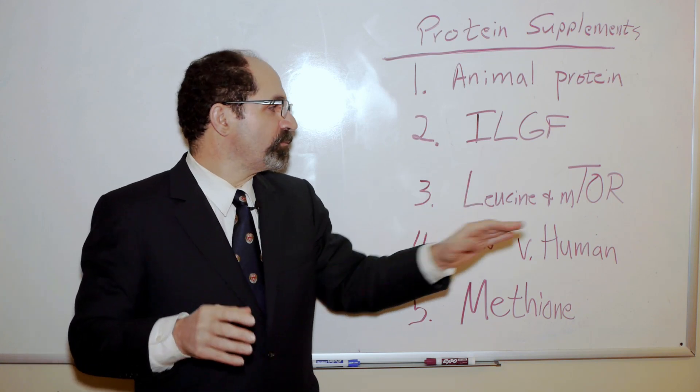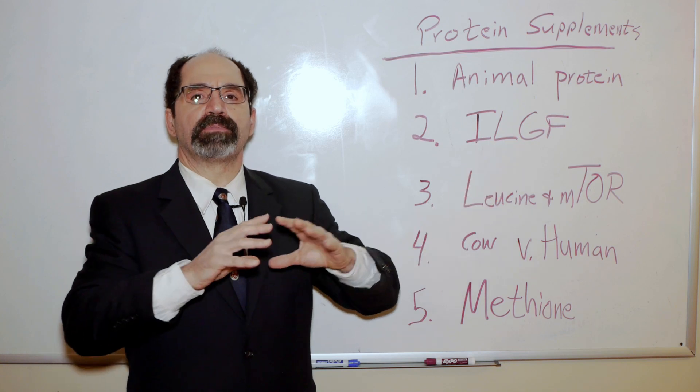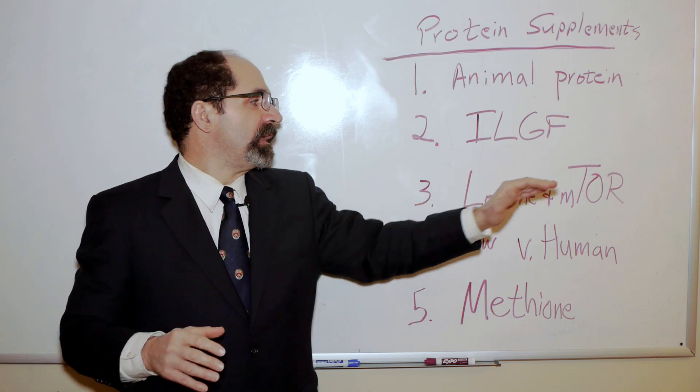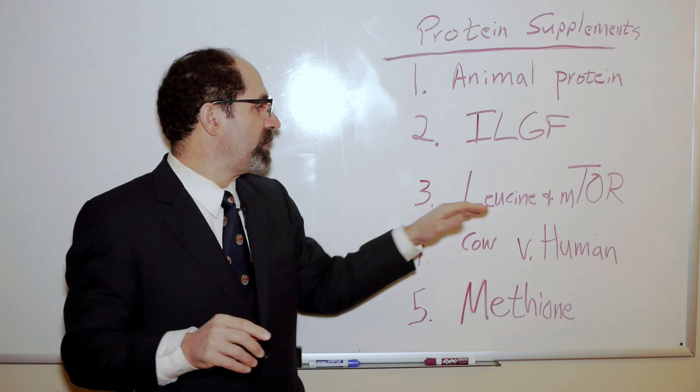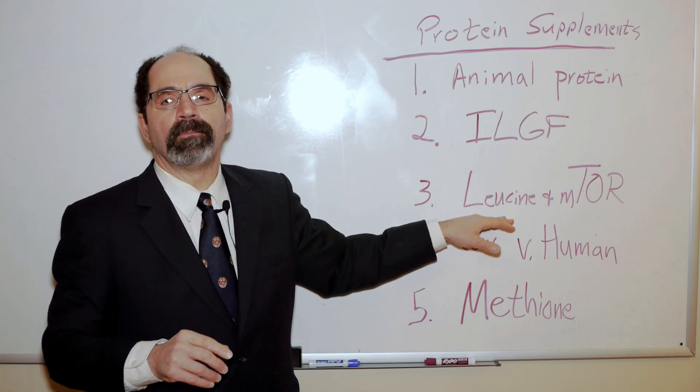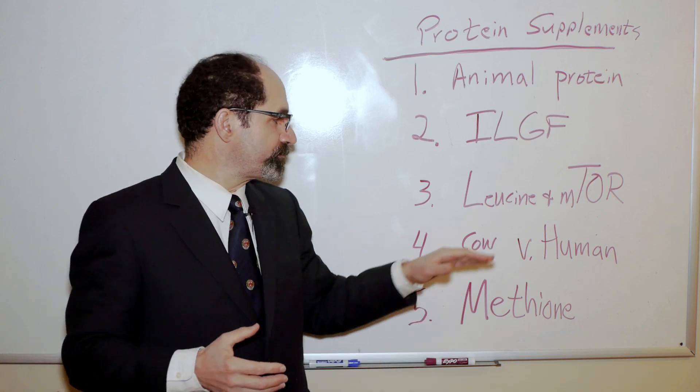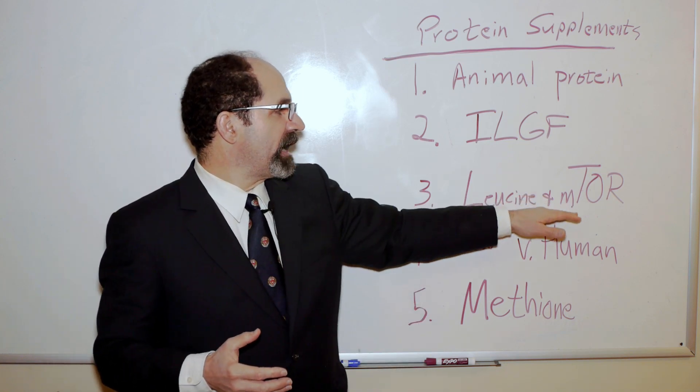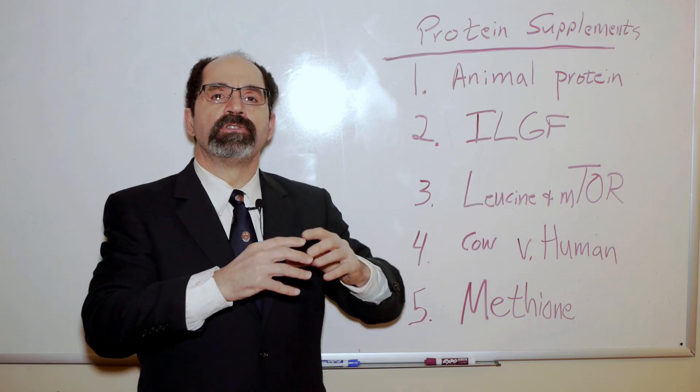Well, the mTOR pathway before a cell can be ready to replicate or make a bunch of proteins and expand its size, mTOR makes sure that all the nutrients are available. And the biggest rate-limiting step is to make sure that there's enough leucine available. There's a lot more leucine in animal protein than there is in plant protein. So when mTOR has all its ingredients, especially its leucine, it can send a signal for the cell to grow and divide.